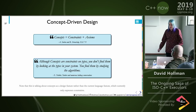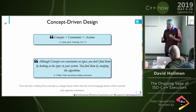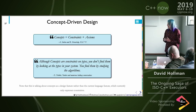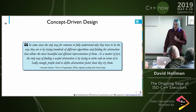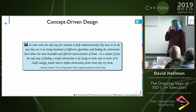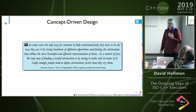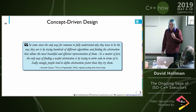Eric Niebler, one of the world's experts on concept-driven design and author of the Ranges TS, says you find your concepts by looking at the algorithms — which is counterintuitive because you'd think you look at the types. But they're really constraints on what the algorithms need to do with the type. Stepanov said: the only way to fully understand why iterators have to be the way they are is by trying hundreds of different algorithms and finding the abstraction that allows the most beautiful and efficient representation. Sadly, people tend to define abstractions faster than they try them.